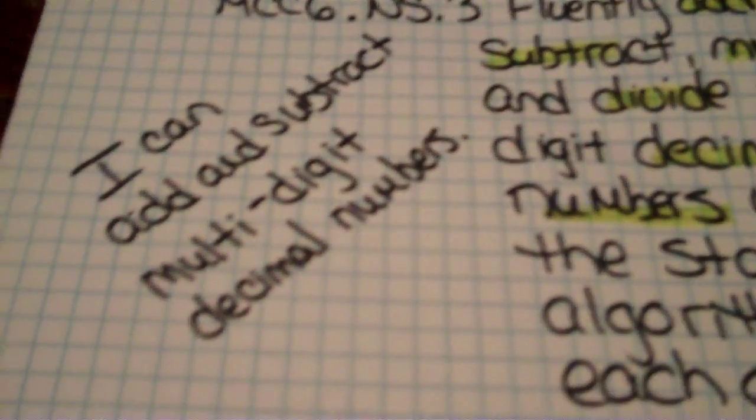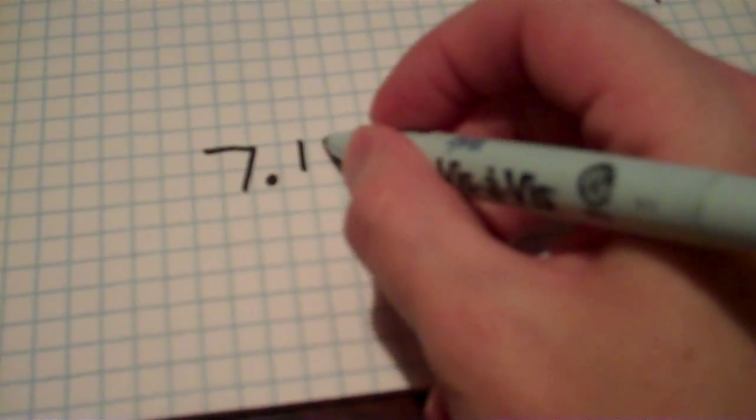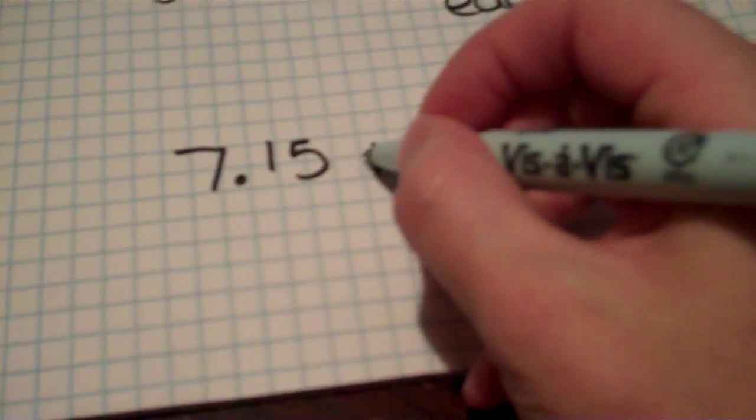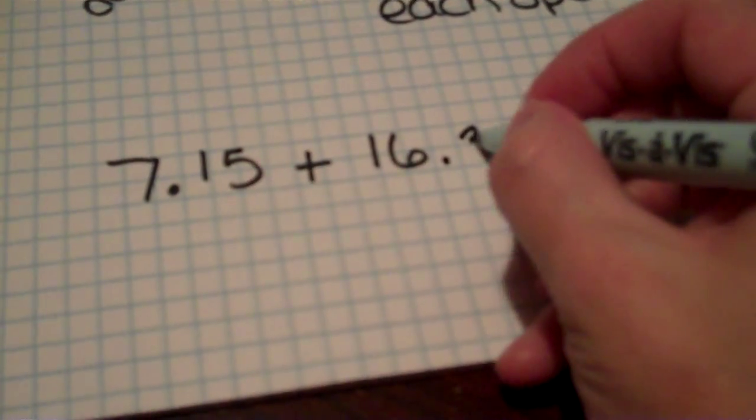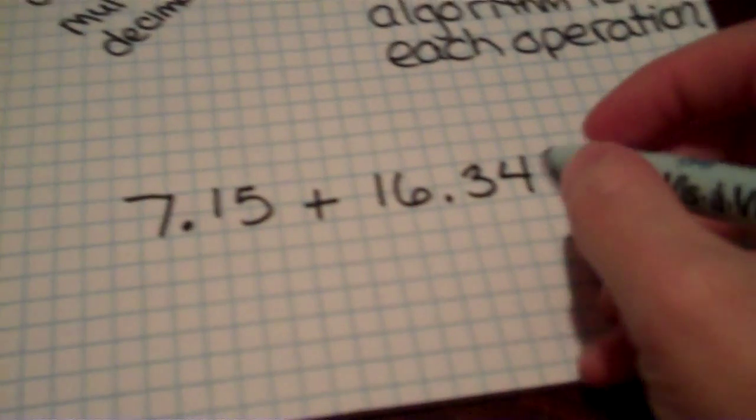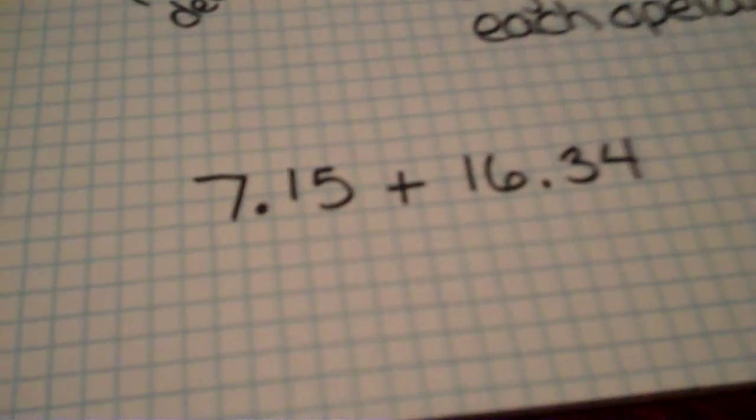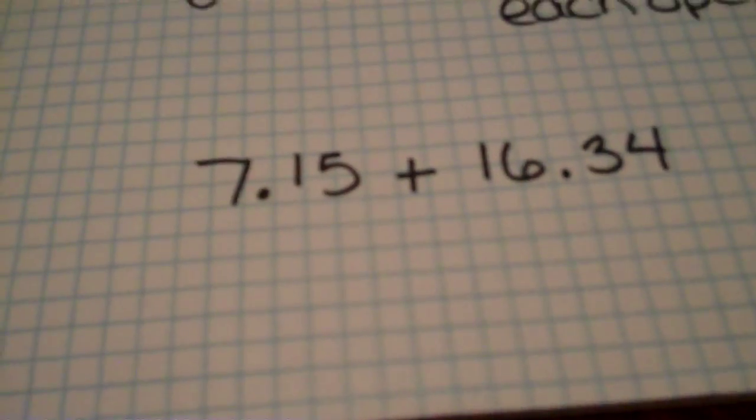Alright, now we're going to actually add and subtract. Now if we have a problem, 7 and 15 hundredths plus 16 and 34 hundredths.